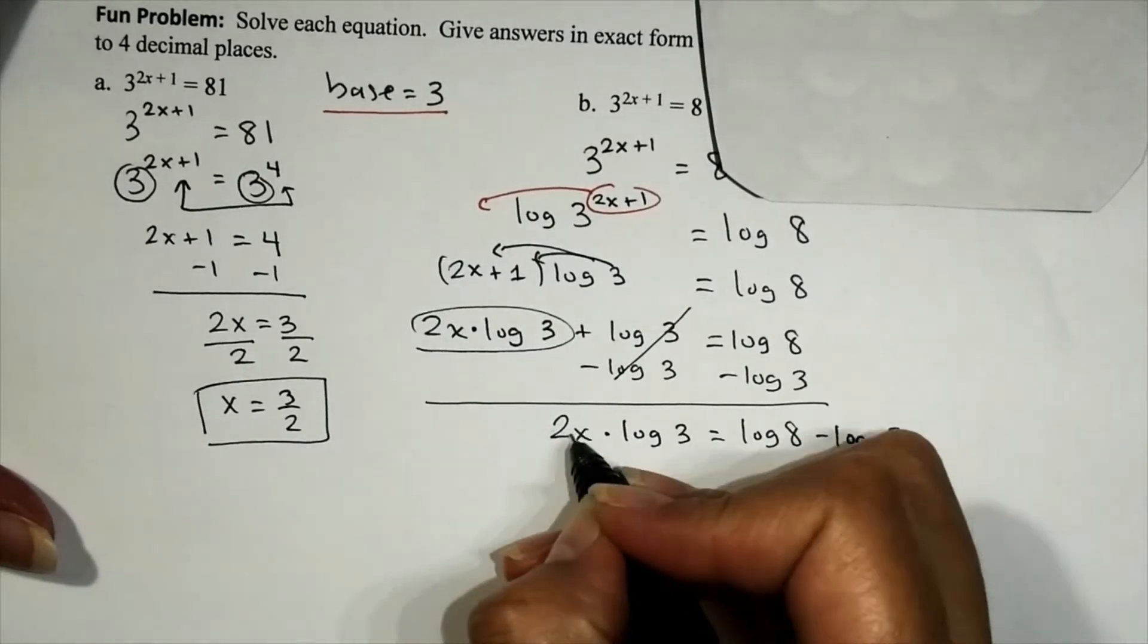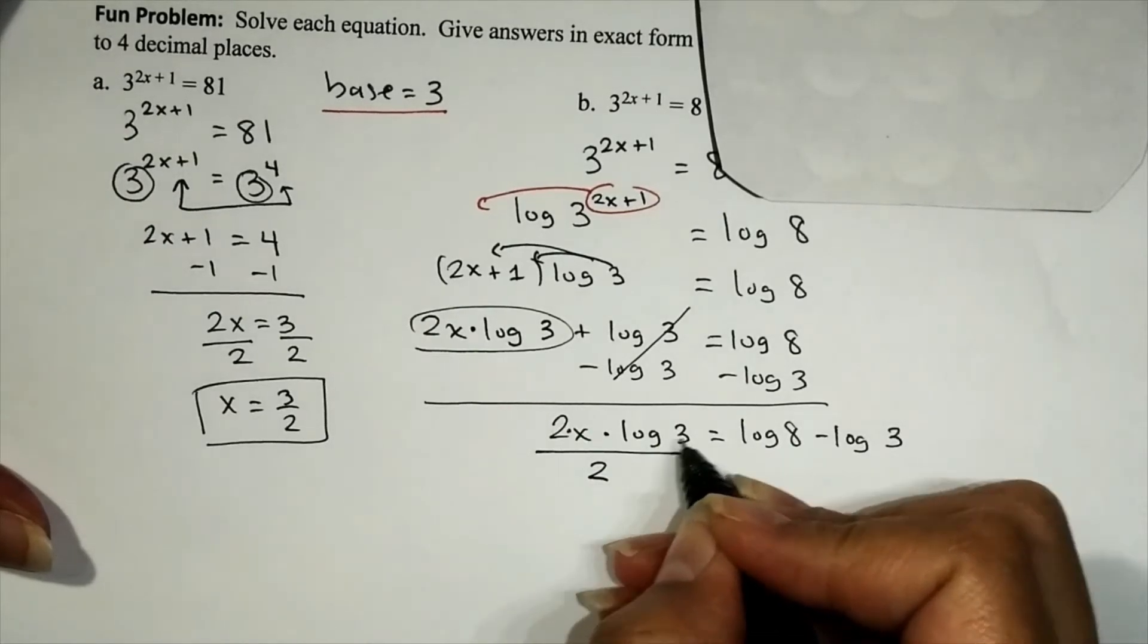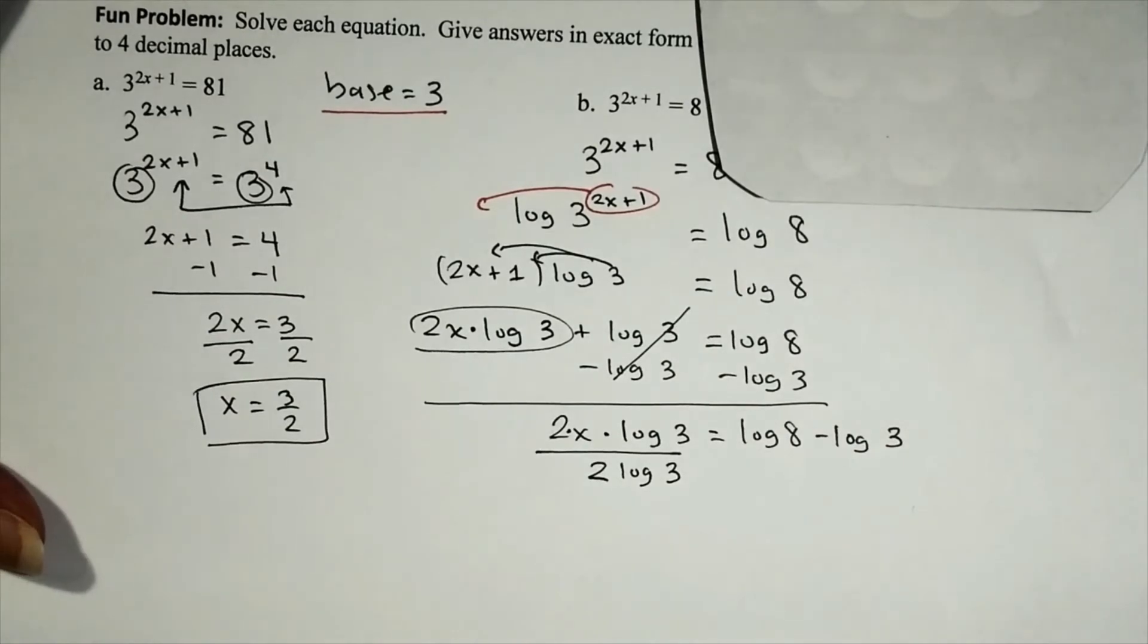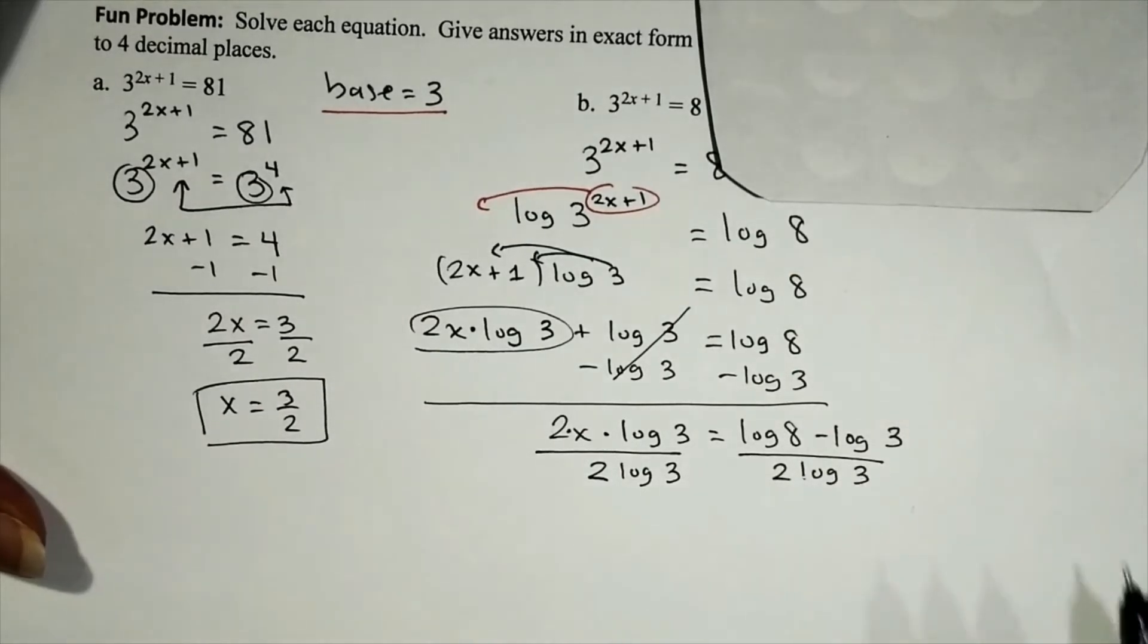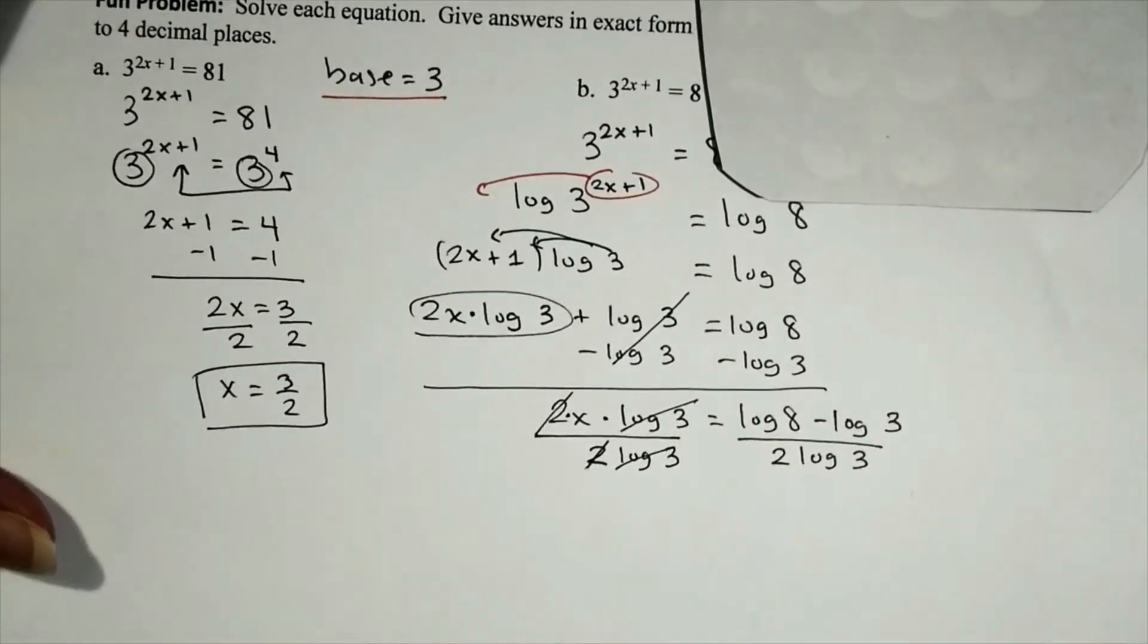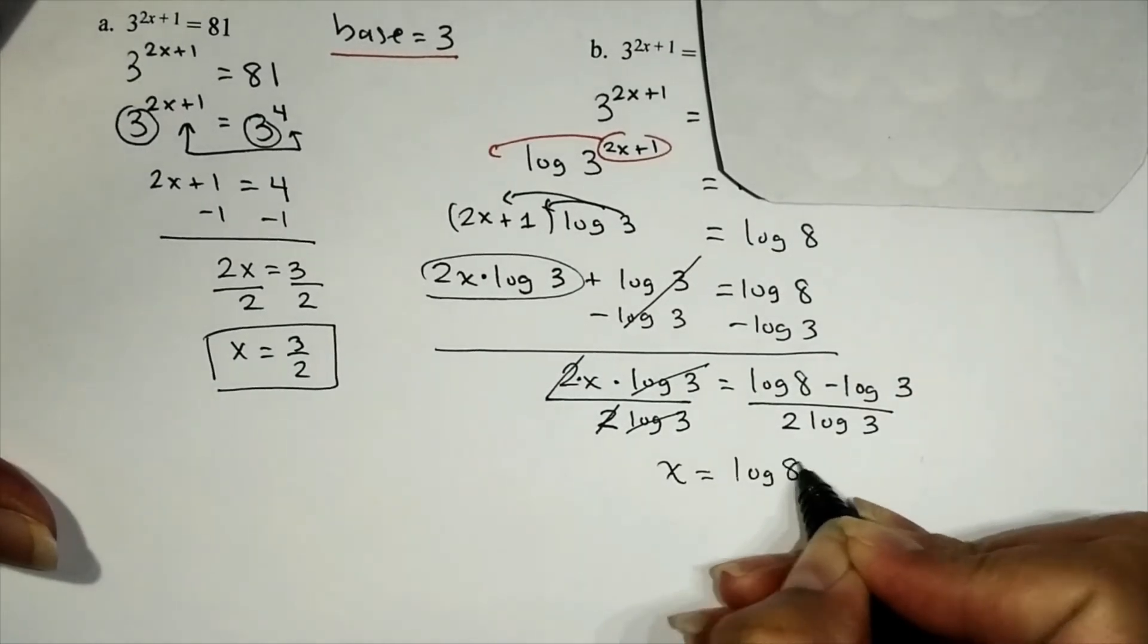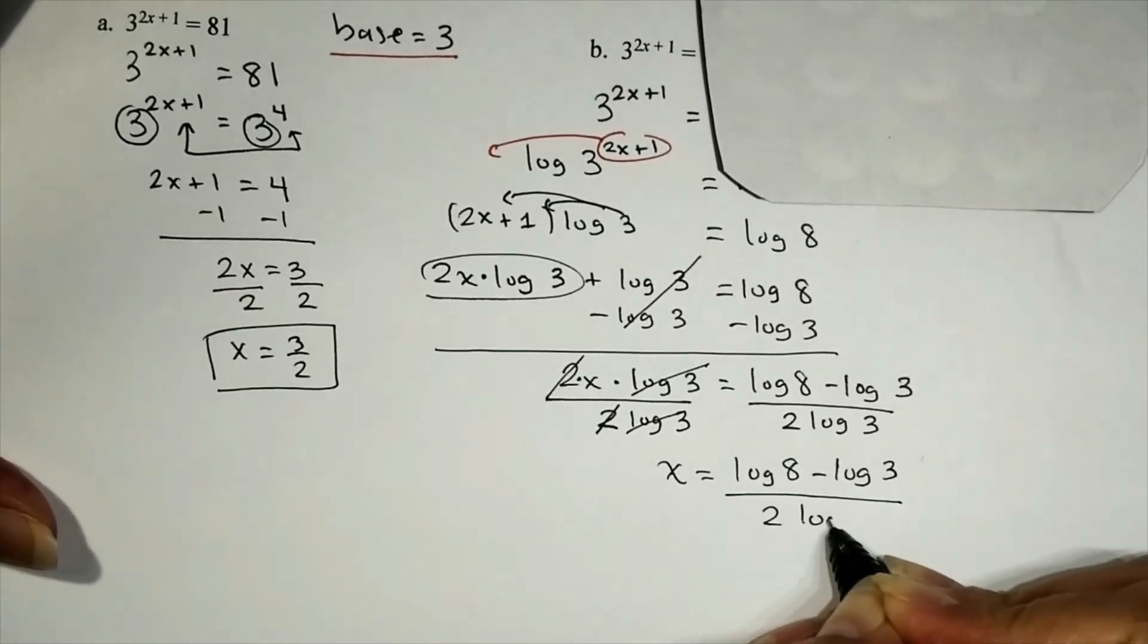So to finish it off, to get rid of the times 2, we're going to go ahead and divide both sides by 2. To get rid of the times log 3, we're going to go ahead divide both sides by log 3. All together, to get rid of the times 2 log 3, let's go ahead and divide both sides by 2 log 3. Quotient of 2 in itself gives us 1, or we say it cancels. Quotient of log 3 in itself gives us 1, or we say it cancels. And that will leave us with x is equal to exactly log 8 minus log 3 over 2 log 3.